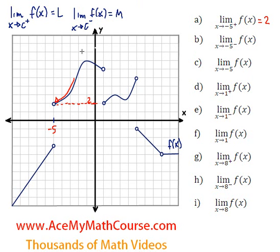Back to this f function. If we're approaching negative 5 from the left of f — that's negative 5 again — so let's say that's negative 7, negative 6, as we're approaching negative 5, the limit will be negative 3.